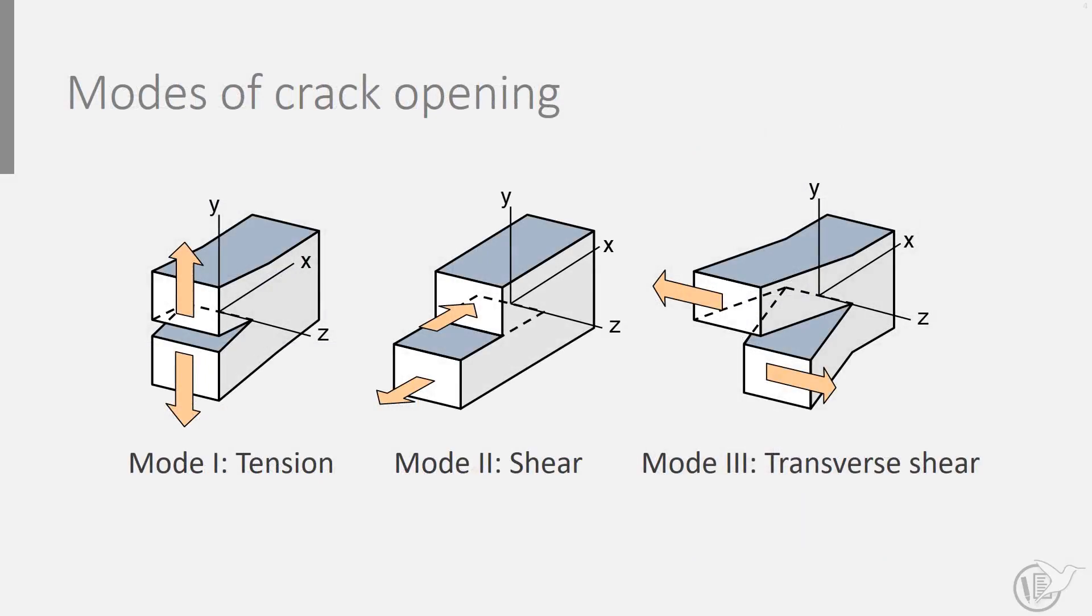Cracks grow through material in different opening modes. These modes describe how cracks effectively open at the tip, which is not necessarily the same as a loading mode. One may pull a crack open in tension, which may still result in a crack surface where the opening mode is a combination of these opening modes.